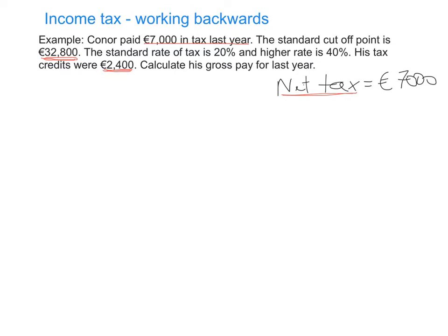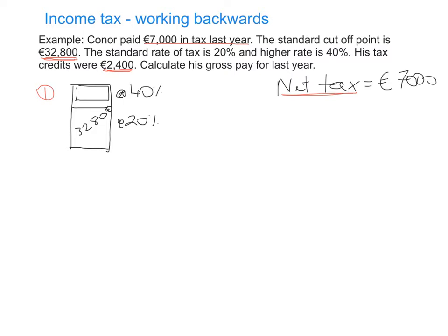Step one, just like in the previous video, we're going to draw a picture and fill in what we know. I drew a rectangle to represent his gross pay. We don't know the total yet, but we do know that up until the standard cut-off point, the maximum that can be in here is £32,800, and we know he pays tax at 20% here. We don't know how much goes into the higher section because we don't know how much extra he's earned — that's what we're trying to figure out. But whatever he does earn in that section was taxed at 40%.